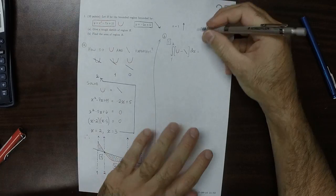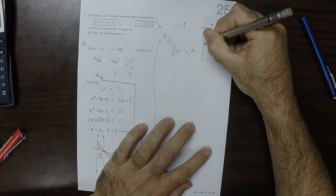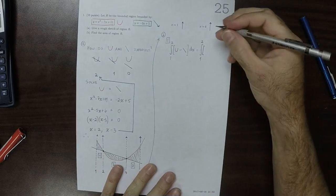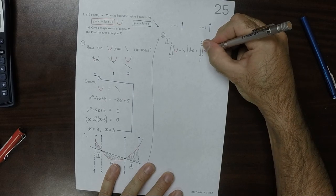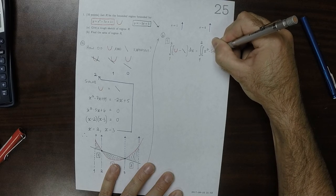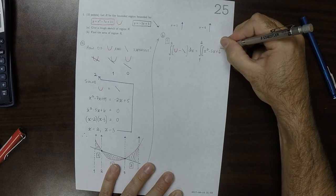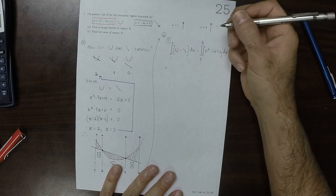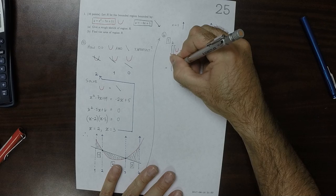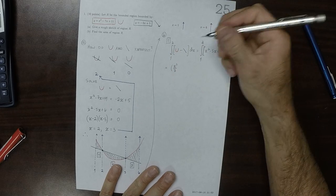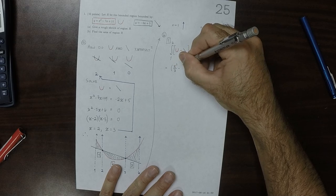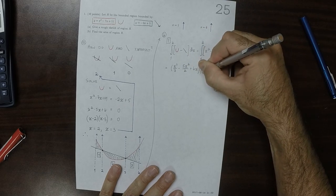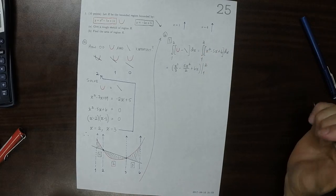So that is integral 1 to 2, and we already did parabola minus the line right there. So it's that. So that would be x squared minus 5x plus 6 dx. So that is x cubed over 3 minus 5x squared over 2 plus 6x, and then evaluate it from 1 to 2.